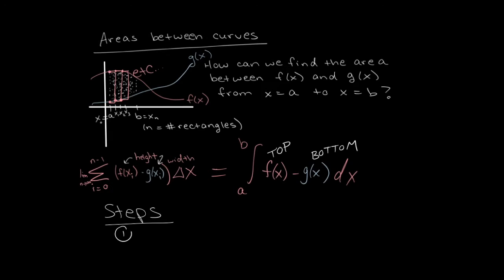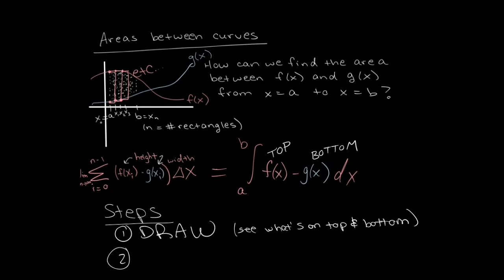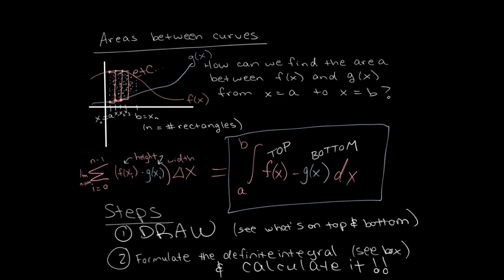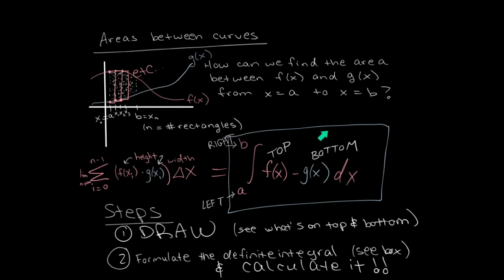This is how we calculate areas between curves. In general, the steps are: first, draw everything; then identify what's on top and what's on the bottom; then put together the definite integral and calculate it. The left x value is on the bottom of the integral and the right x value is on the top. You take the top function minus the bottom function, integrated from the left x value to the right x value. We'll use the Fundamental Theorem of Calculus for these problems.